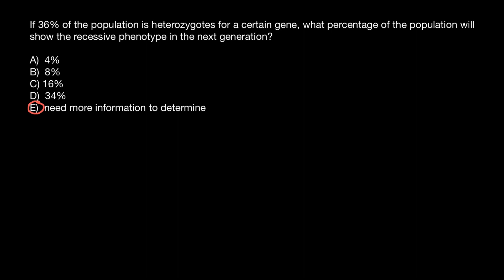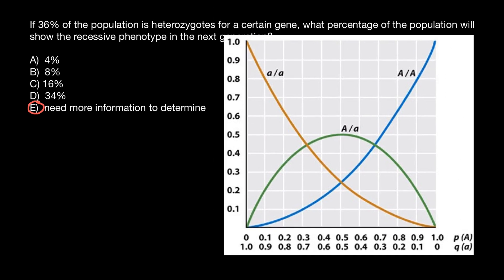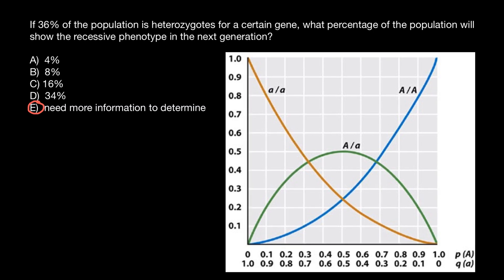But if we did know that information, then we could solve this problem. Take a look at this picture. Let me explain what it shows. The green line represents the heterozygous genotype. The orange or yellow line represents the homozygous recessive genotype. And the blue line represents the homozygous dominant genotype.